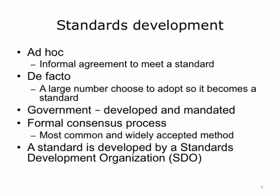Let's talk about how standards are actually formed. There are four ways standards come into fruition. The first way is ad hoc — an informal agreement to make a standard, for example, a couple of people deciding to use the same format. De facto is where a large number choose to adopt something, so it becomes a standard, like a trend. Then there is a government-developed and mandated standard — for example, if you want to submit your tax information to the IRS, you need to use their standard form. However, the most common and widely accepted method is via a formal voluntary consensus process. Organizations that develop standards are called Standards Development Organizations, or SDOs.